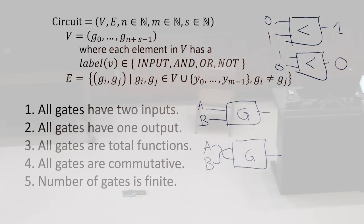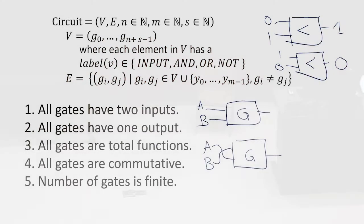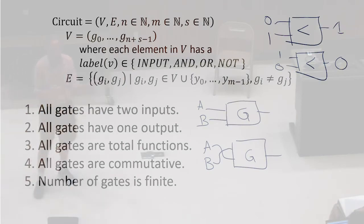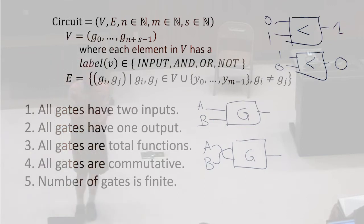We haven't given any understanding of anything yet — they're just labels now. Last class we talked about Boolean circuits with AND gates, and there's an execution model we intuitively have in mind. But for now we're assuming we're just talking about this as a representation. We're not making any assumptions about the execution model, which means we're also not making any assumptions about the gates.